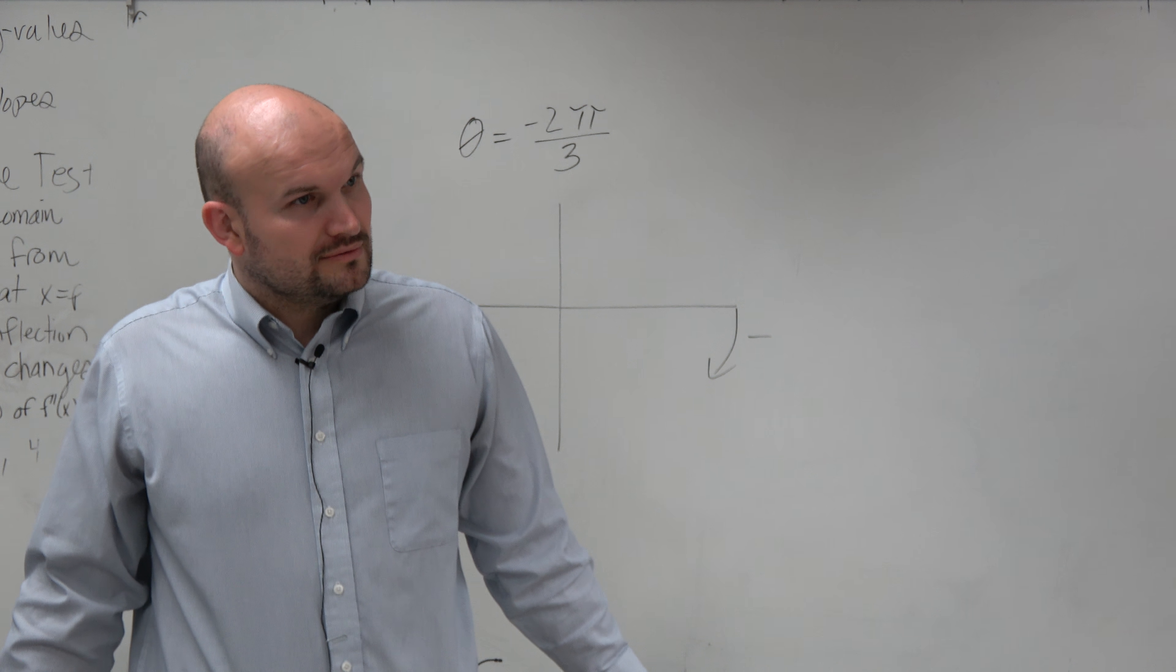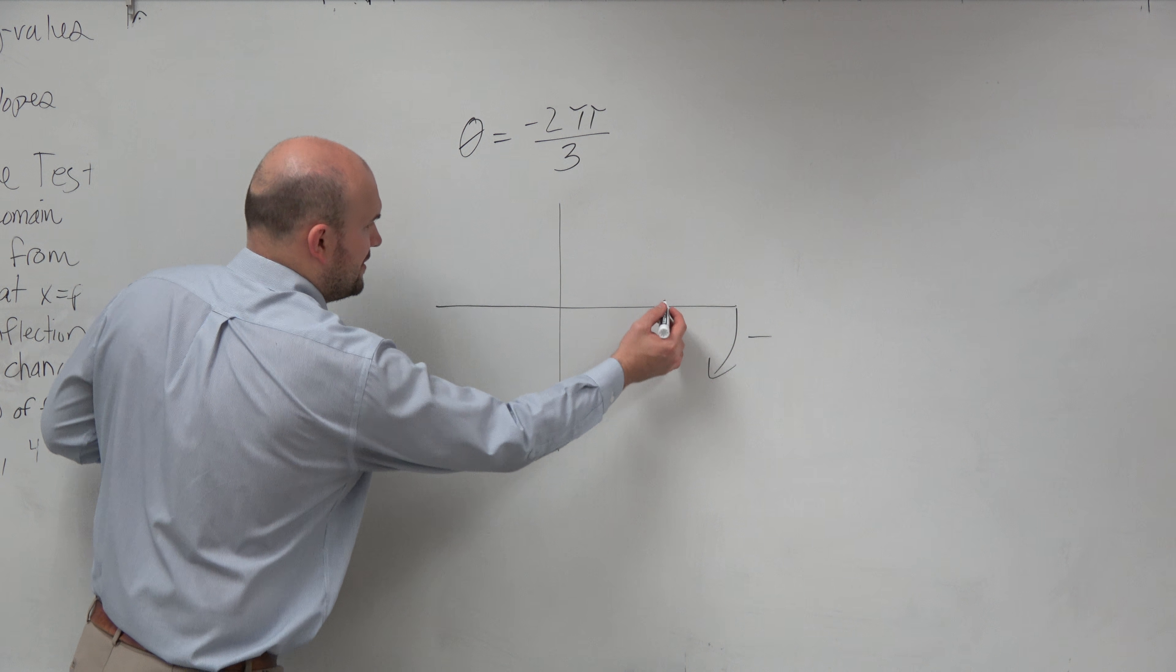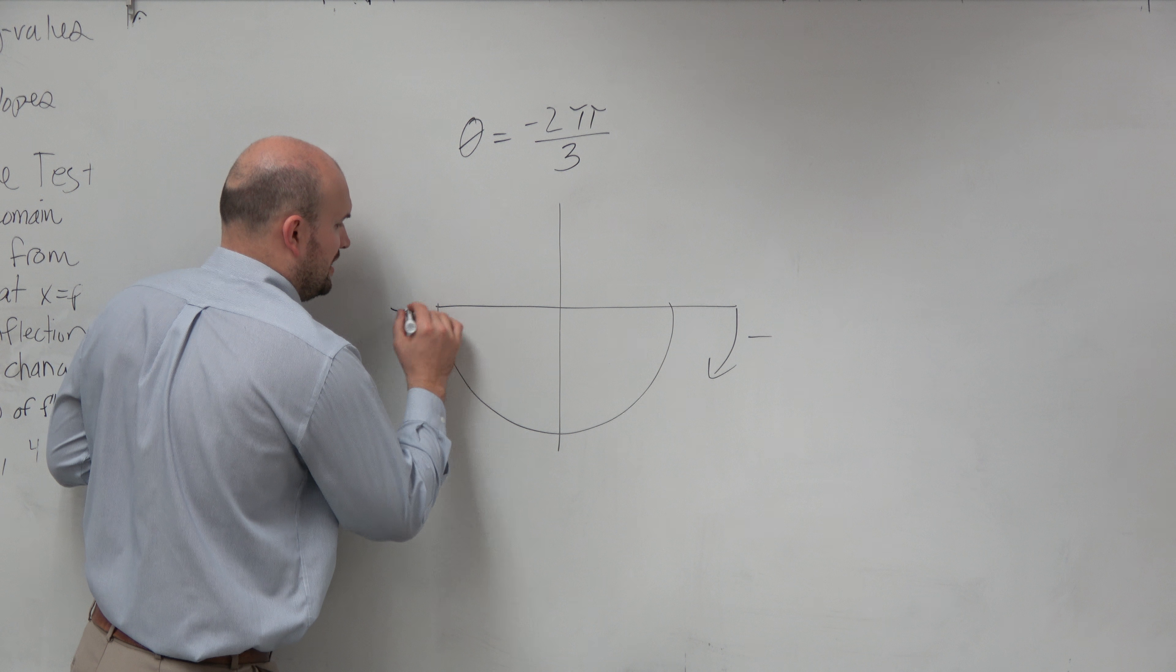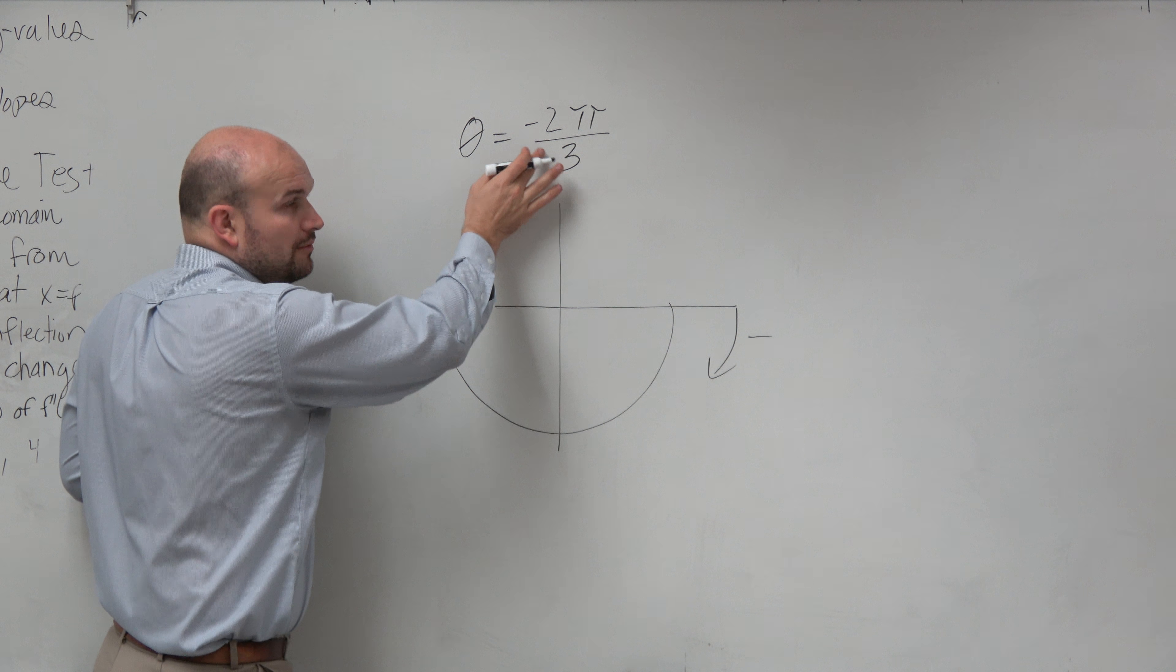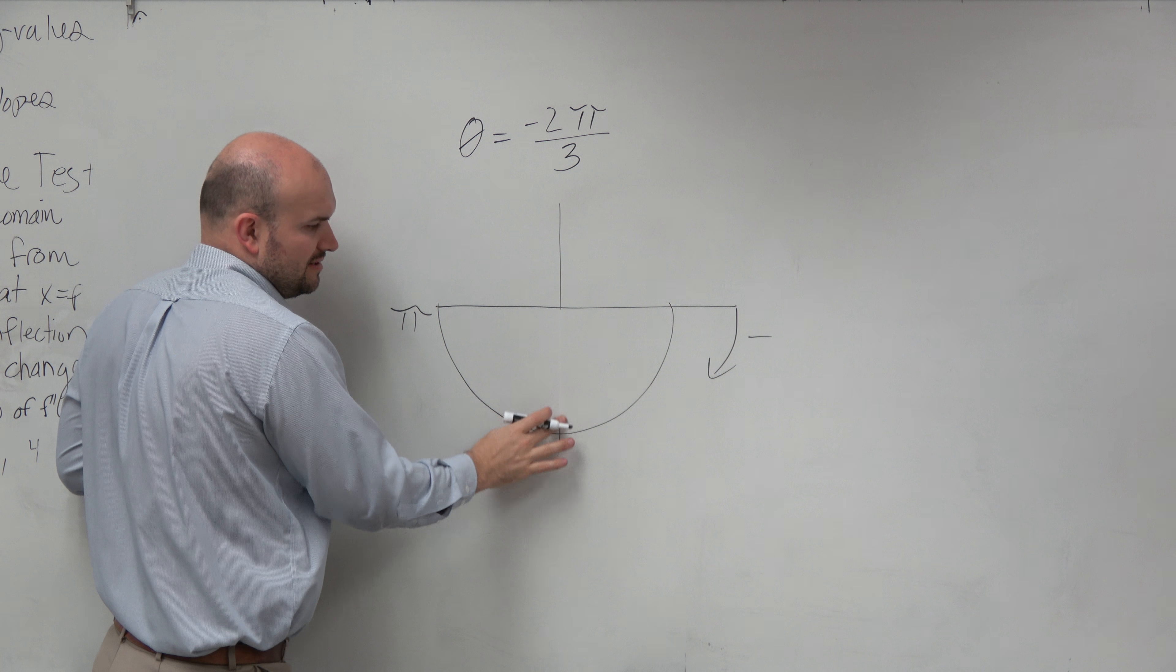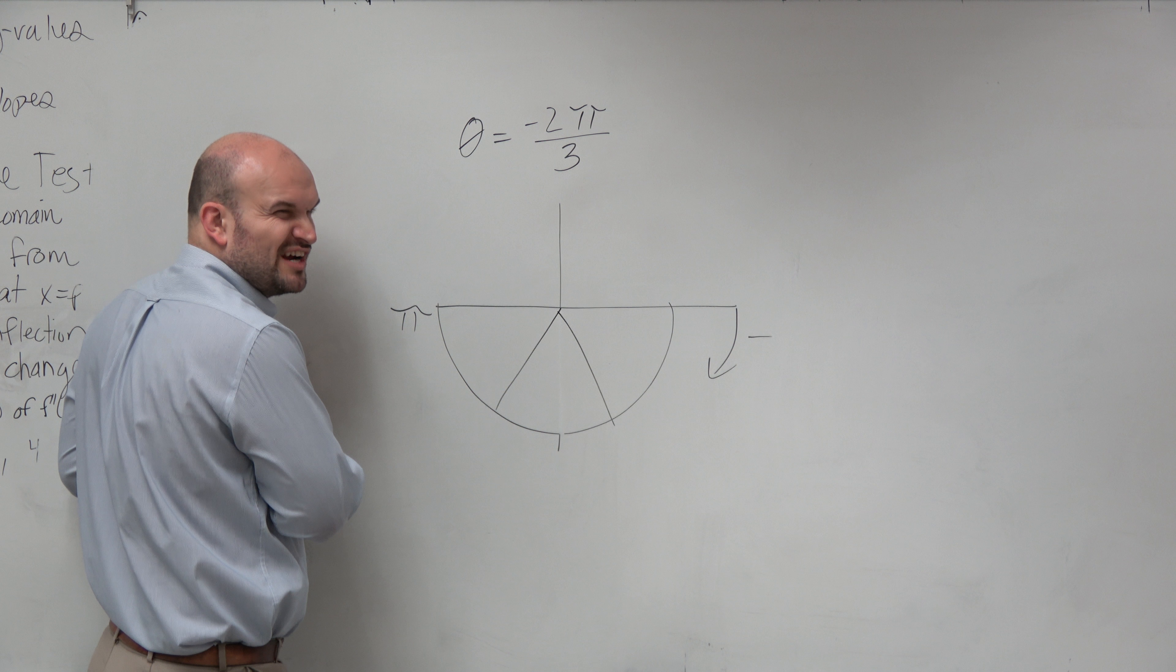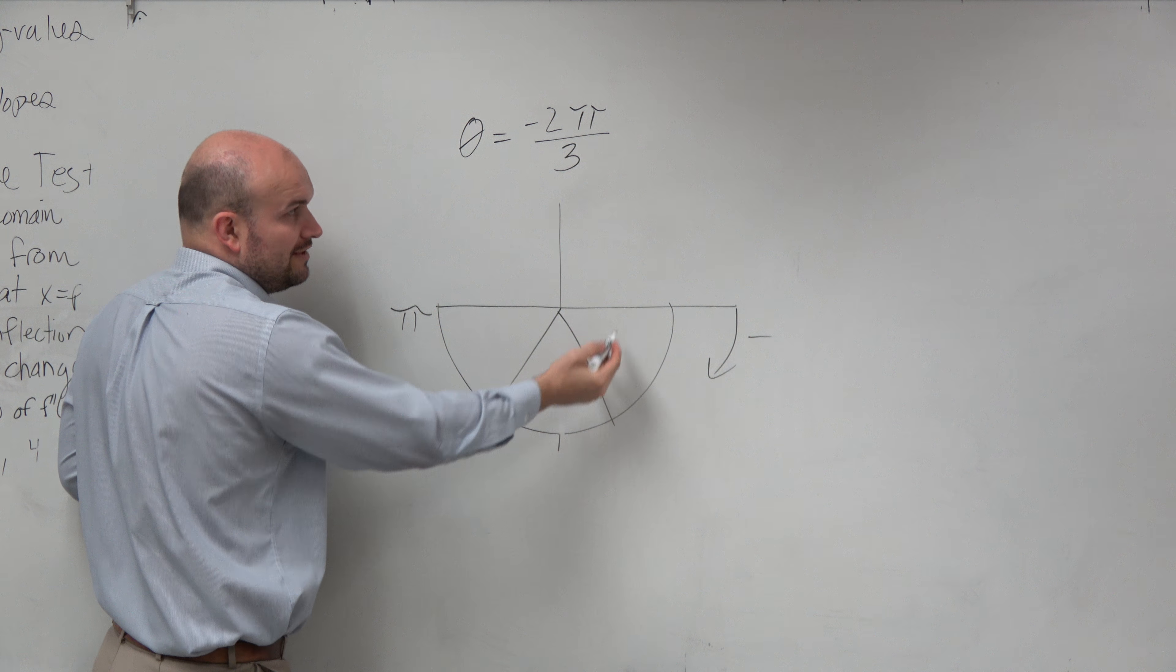We understand that halfway around the circle still has a measurement of pi. But now we're talking about thirds, not sixths. Sometimes the y-axis gets in the way of understanding thirds, so I'm going to erase it here so we can look at pi in thirds.